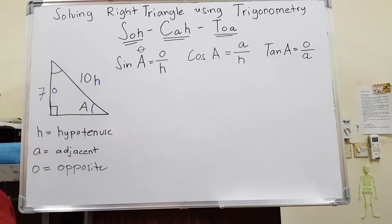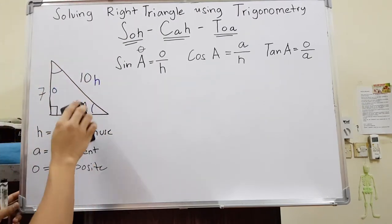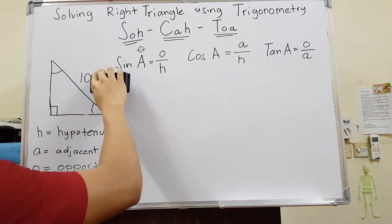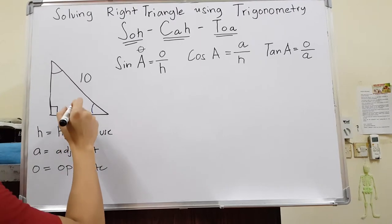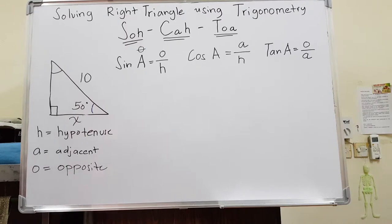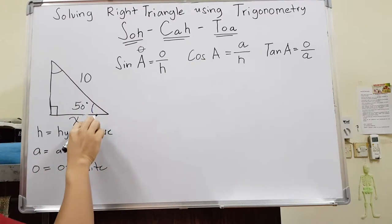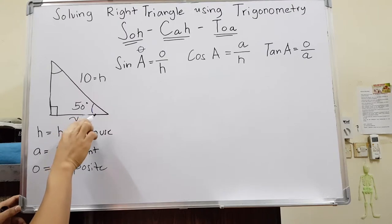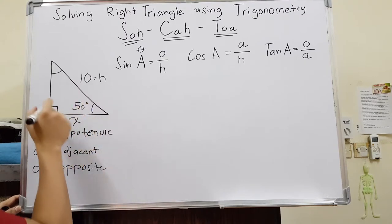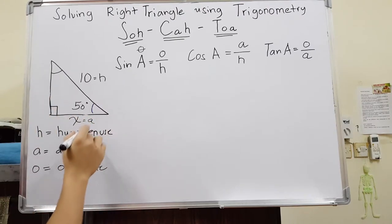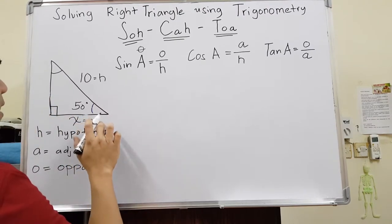Now we are going to look for a missing side. Let's say we have 50 degrees given, and we want to find X, which is the adjacent side. Label your information: the given side of 10 is the hypotenuse, and X is adjacent. We have A and H, so we use cosine — CAH.